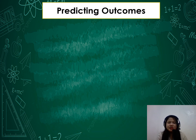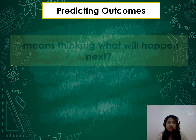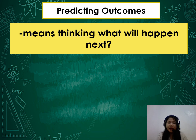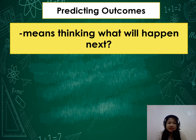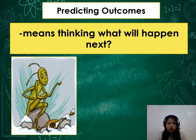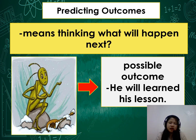Let's have predicting outcomes. When we say predicting outcomes, it means thinking about what will happen next — just like a while ago when I asked you to say what the possible ending of the story would be. What will be the possible outcome of the story we watched? Maybe the possible outcome is the grasshopper will learn his lesson.